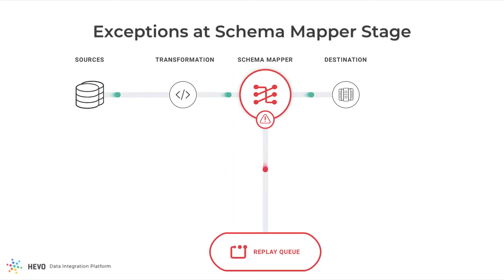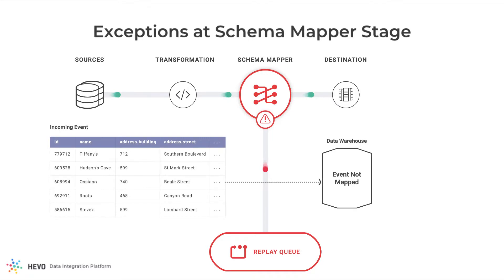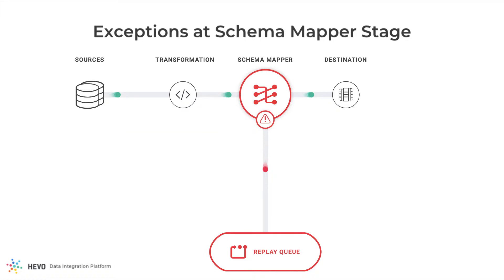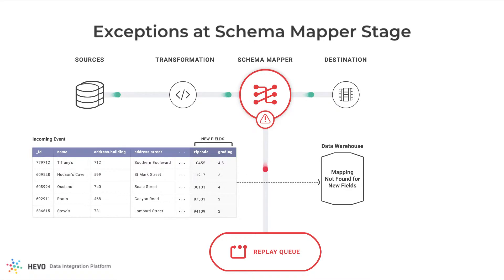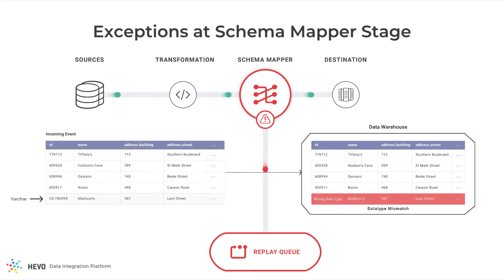In the schema mapper, there are many scenarios when an event can move to the Replay Queue. Let's say you haven't yet mapped an event onto a destination table — the event can't be loaded in such cases, hence it'll be moved to the Replay Queue. HEVO may detect new fields in the incoming event that may not have been mapped to destination fields yet; such records also go to the Replay Queue. In cases where the data type of an incoming field has changed in a way that the event can no longer be stored in the previously mapped field, this too is sent to the Replay Queue.